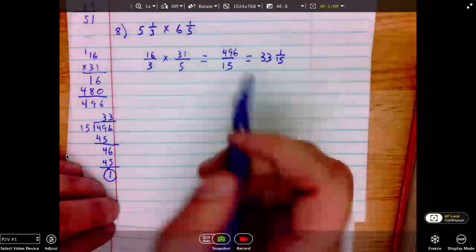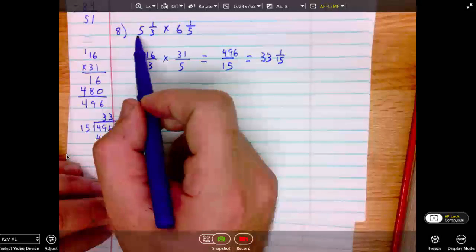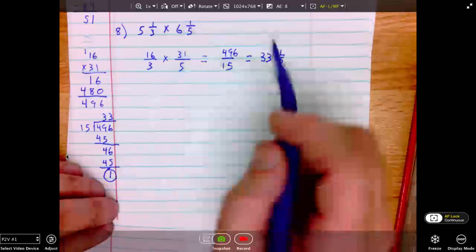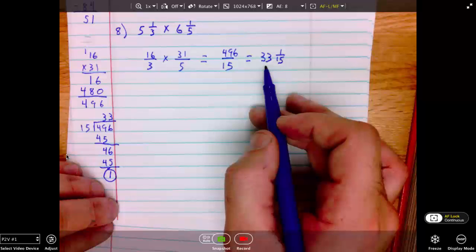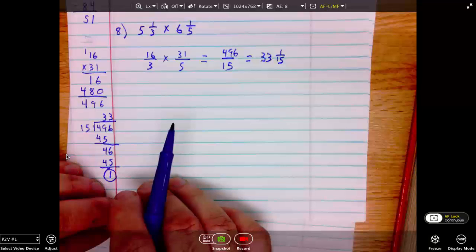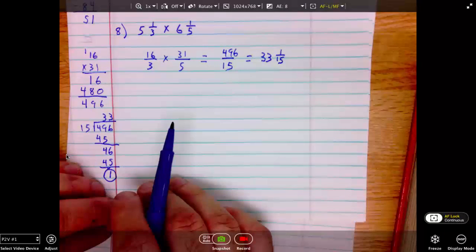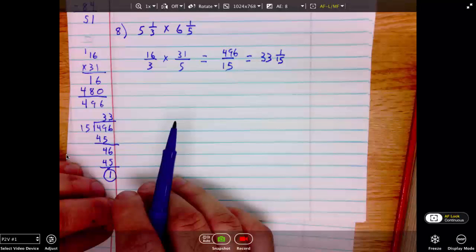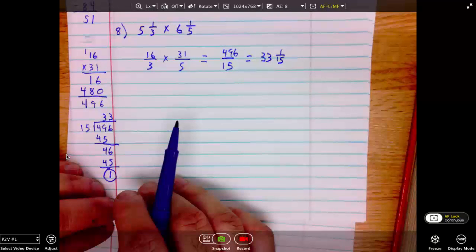Lastly, we should check for reasonableness. Well, this is 5 and a little bit. This is 6 and a little bit. 5 times 6 is 30, but we expect it to be more than 30 because of these two fractional parts. To have an answer that is 33 is certainly reasonable. You are now ready to do the final two problems from Tuesday. Problems 5 and 7. 5, since it's an addition, will be like problem number 6. 7, since it's a division, will be like problem number 8. You should pause the video at this time.